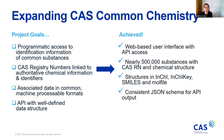CAS Common Chemistry has a web-based user interface with API access. It includes nearly 500,000 chemical substances with their CAS registry numbers and chemical structures provided in a variety of formats, including molefile, InChI, InChIKey, and SMILES. It also includes a consistent JSON schema for API-based access for more programmatic use cases.